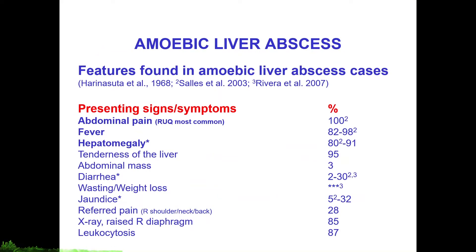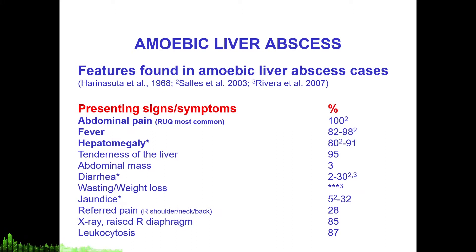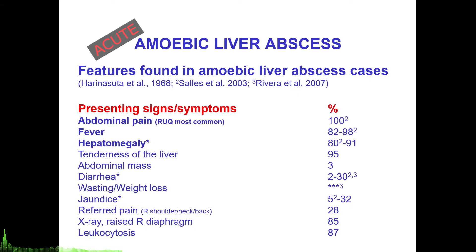Several references describing the common signs and symptoms associated with amoebic liver abscess have been collated, including studies by Hirana Suta et al., Salas et al., and Rivera et al. Abdominal pain, particularly pain in the right upper quadrant, is the most common sign or symptom. In patients with acute onset, fever is generally present in more than 90% of cases.